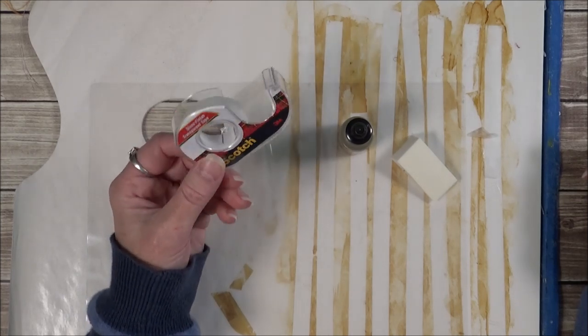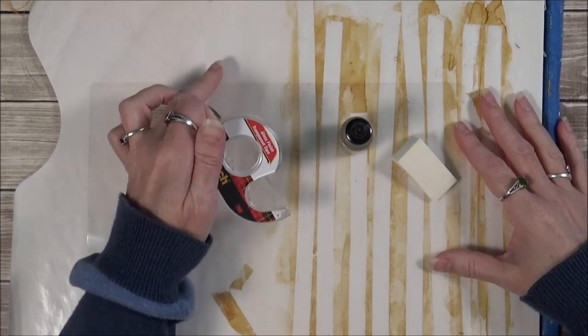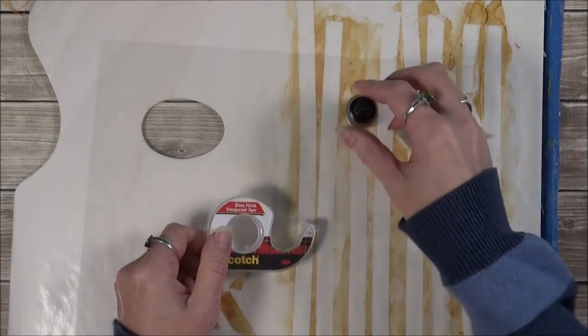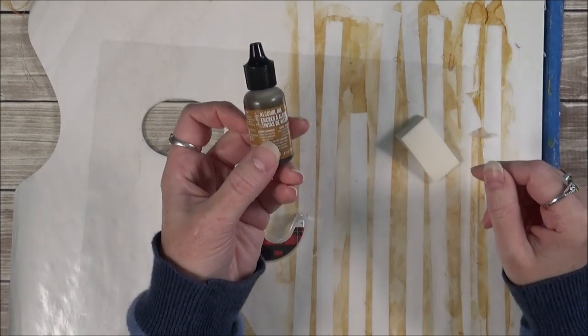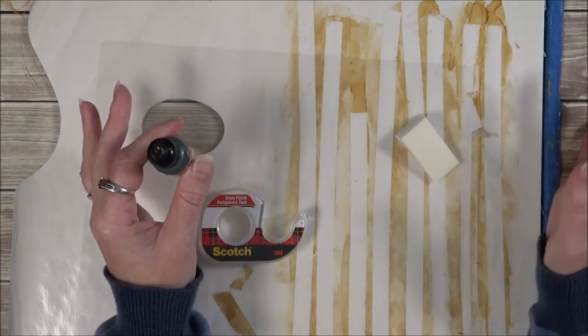So all it is is I take my tape, clear tape, and put it on either a waxy surface or a clear plastic surface. And I rub my alcohol ink on there and it just looks like old tape.